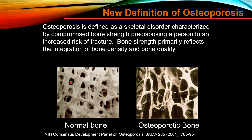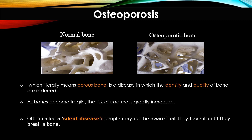Normal bone trabeculae form a dense mesh, whereas in osteoporotic bone some trabeculae are fractured, thinned, or not completely connecting the vertical trabeculae. Osteoporosis literally means 'porous bone' — a disease in which density and quality of bone are reduced. As bone becomes fragile, the risk of fracture is greatly increased, and that is the main clinical problem.